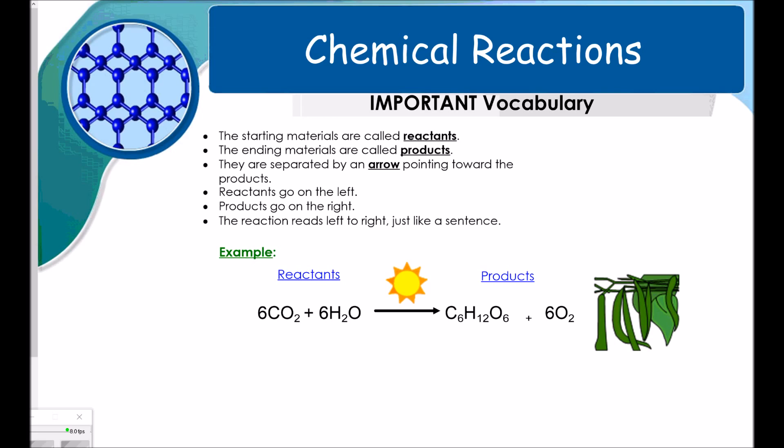The last thing I want to address in this video is chemical reactions. And this is really important because you're in chemistry class. So these are some really important pieces of vocabulary I need you to know all year. The starting materials are called reactants. So the stuff on the left, those are reactants. The ending materials are called products. So the stuff to the right, those are products. So they're separated by an arrow that points to your products, always. Reactants go on the left, products go on the right. The reaction reads left to right just like a sentence. So super important that you know this.